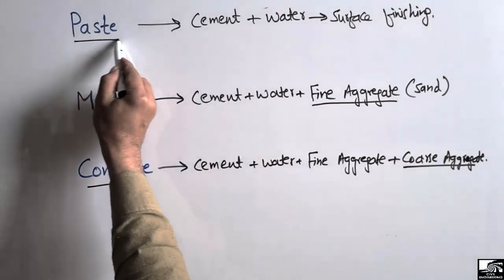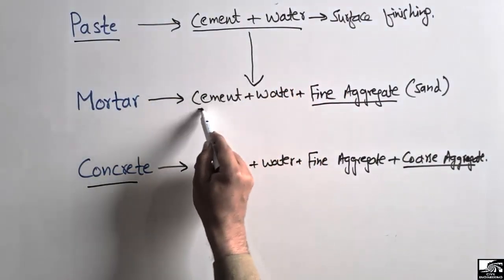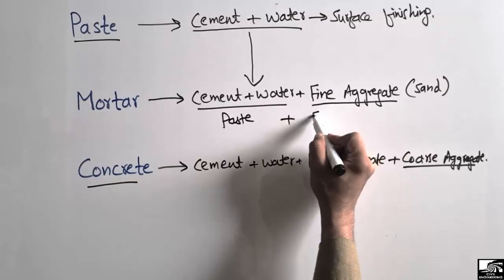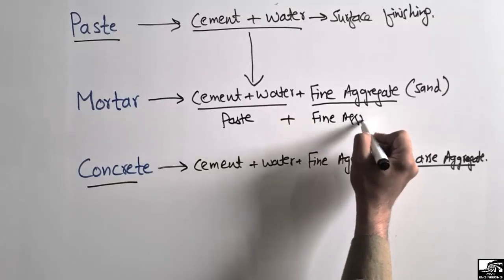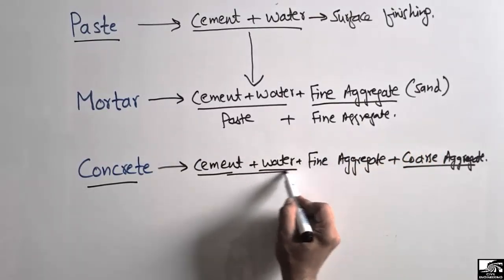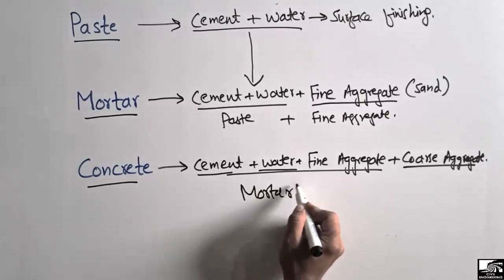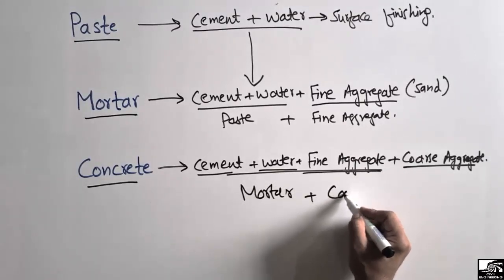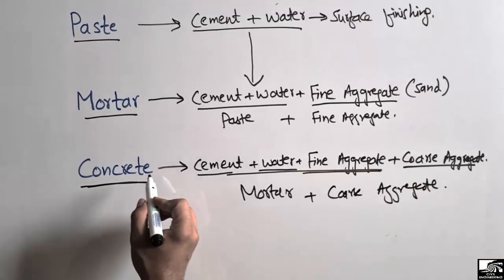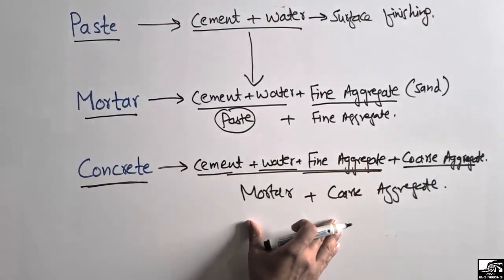Concrete is the most widely used construction material in structures. To summarize: paste is just cement and water. Mortar is paste plus fine aggregate. Concrete is cement, water, fine aggregate, plus coarse aggregate — so concrete contains mortar and paste within it, and mortar contains paste and fine aggregate. These are the main differences between these three types of material.